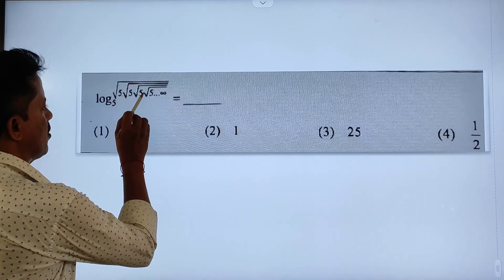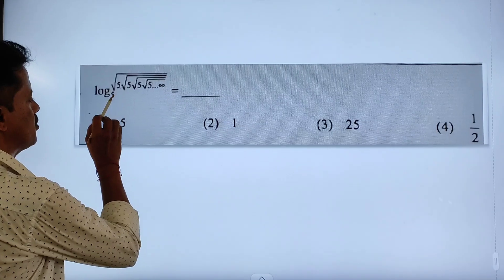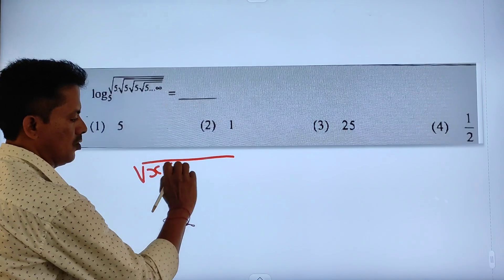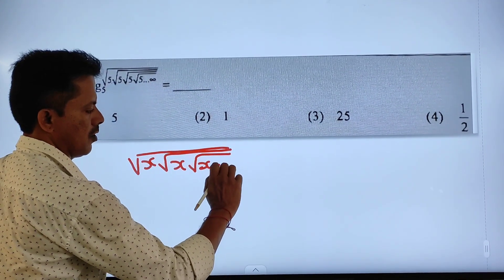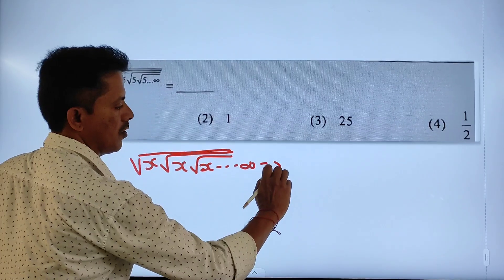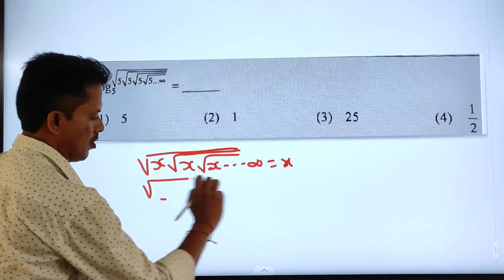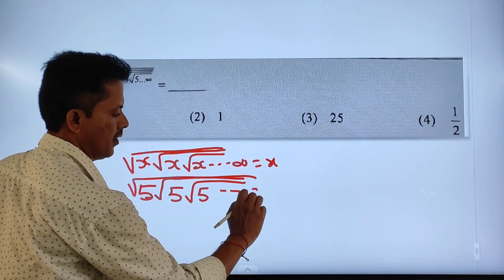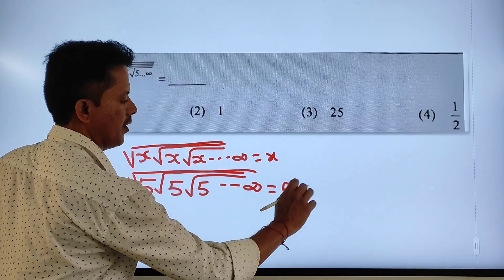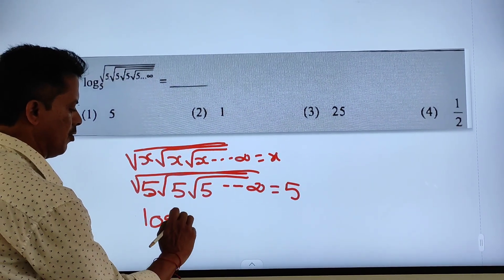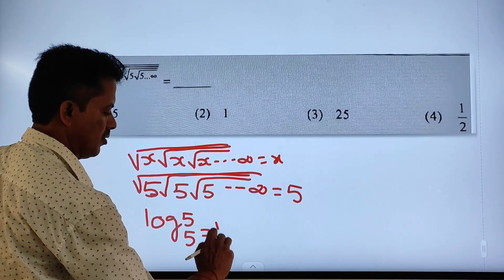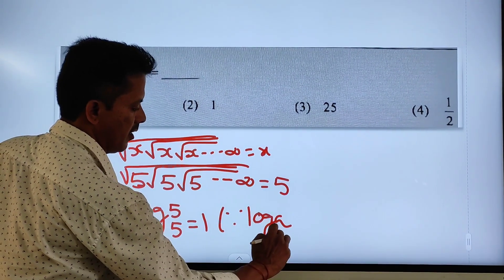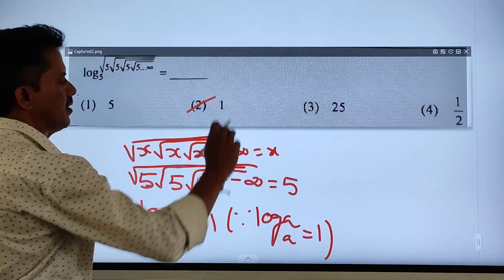log of (√5 · √5 · √5 · √5 ... up to infinity times) base 5. The value of √5 · √5 · √5 up to infinity equals 5. So log 5 base 5 is equal to 1, since log a to the base a equals 1. The second option is the right answer.